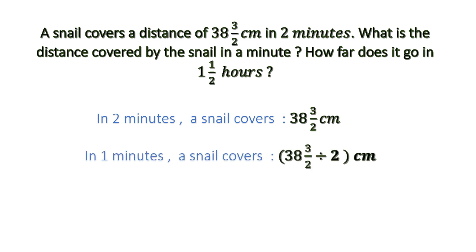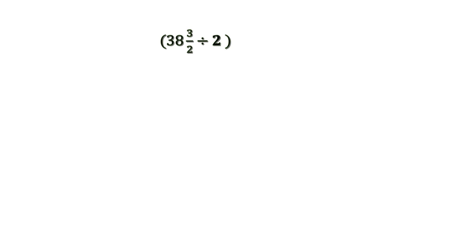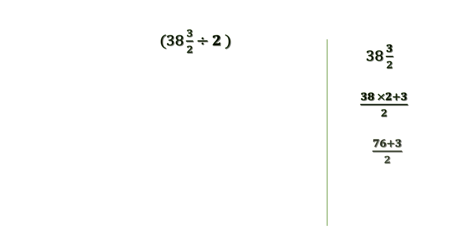In one minute, a snail covers... we have to do this division: 38 and 3/2 divided by 2. Before we proceed, there is a mixed fraction, so let us convert it into an improper fraction. The denominator 2 is multiplied by the whole number 38, and the product is added to the numerator 3. So 38 × 2 = 76, plus 3 gives us 79, and the denominator remains 2. So we can write 38 and 3/2 as 79/2, divided by 2.